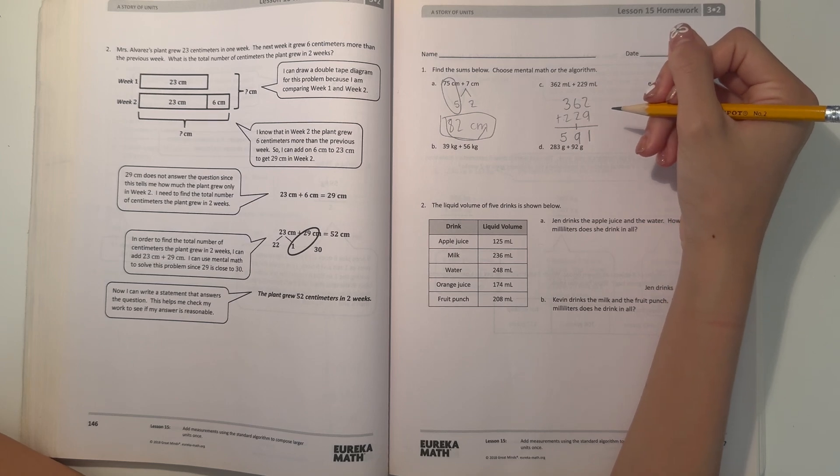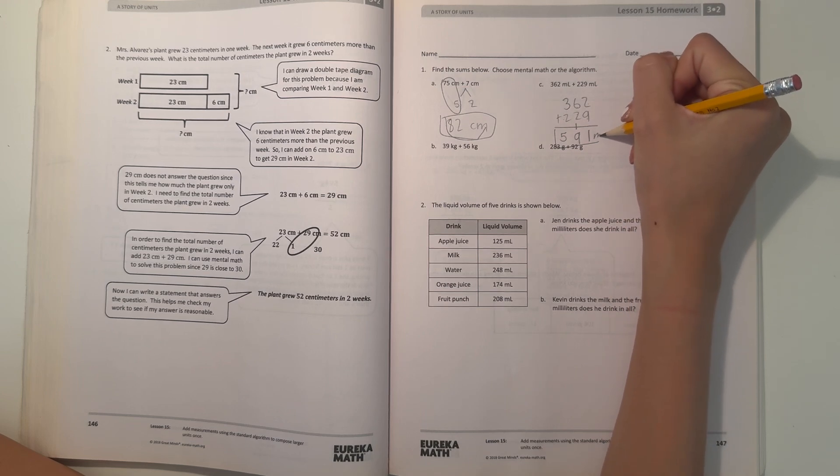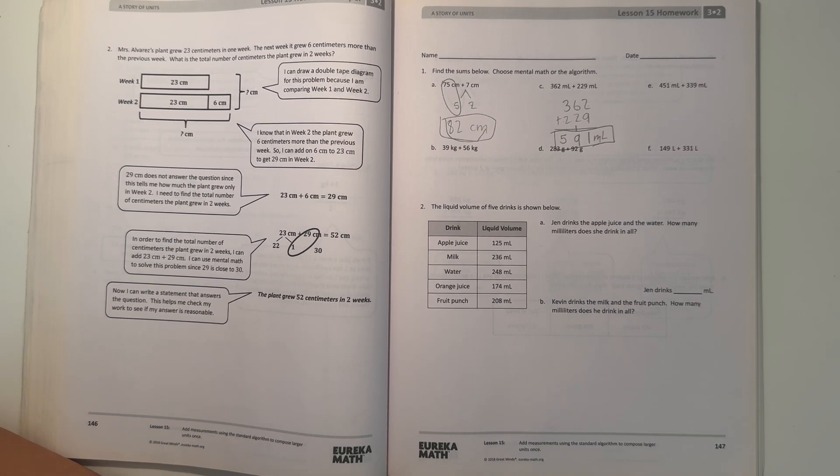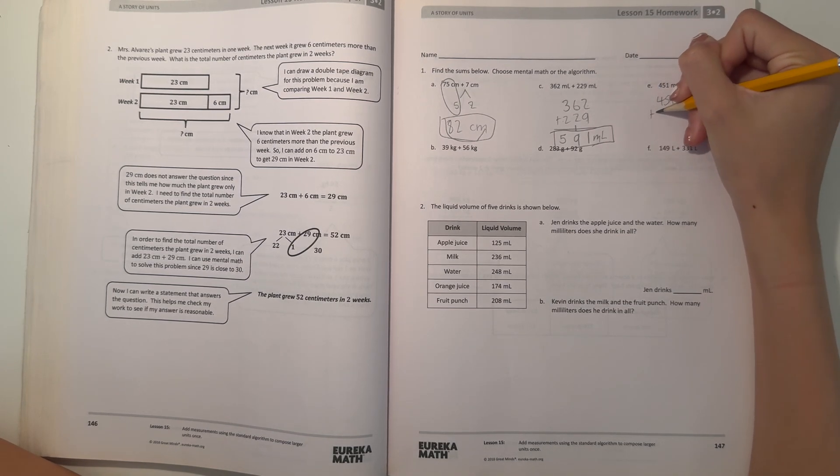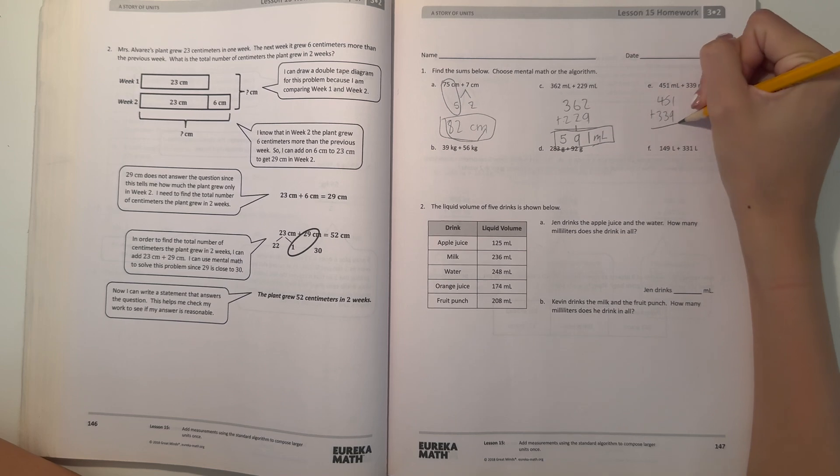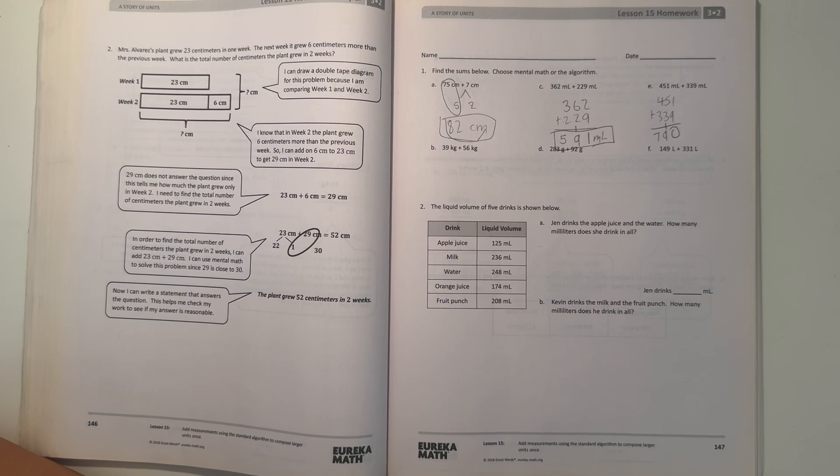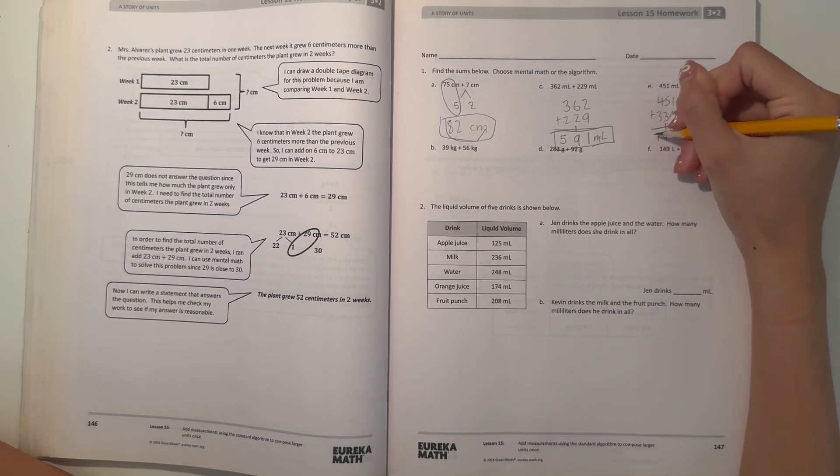So 362 plus 229 would be 591 milliliters. Now we have 451 plus 339. I think I'm going to do the algorithm again. 1 plus 9 is 10, so carry the 1, that's 0. 5 plus 3 is 8, plus 1 is 9. 4 plus 3 is 7. So 451 plus 339 equals 790. Let's write our units after too.